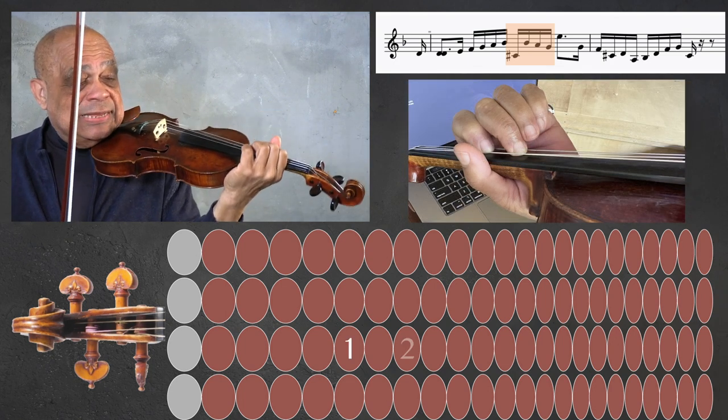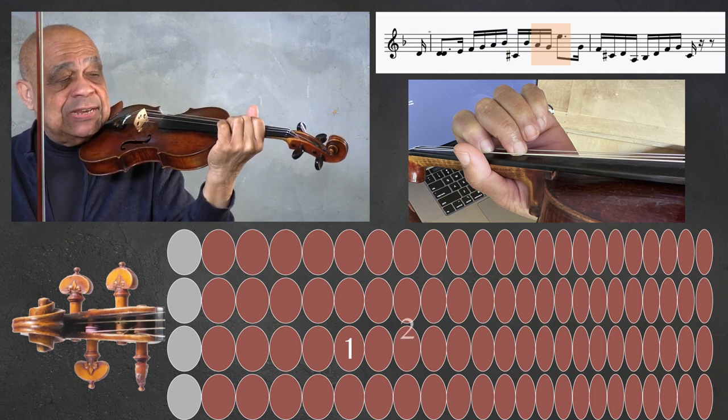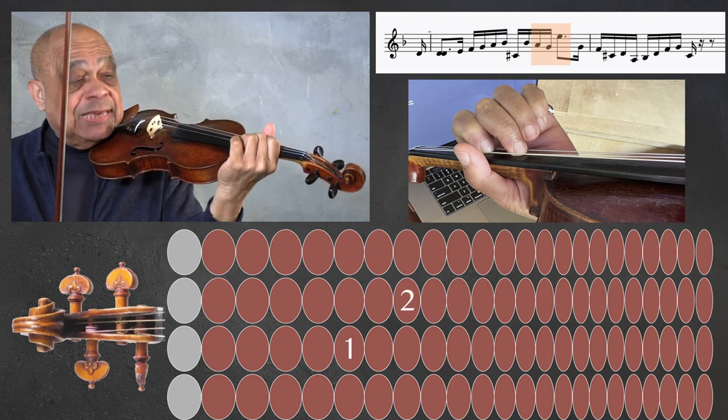And as soon as you've played that G natural, place your second finger E on the A string.